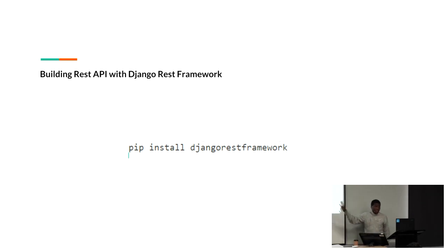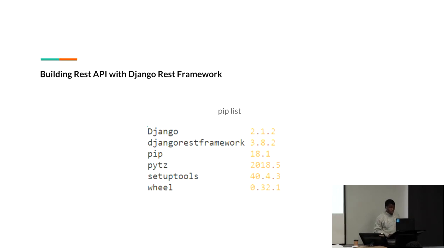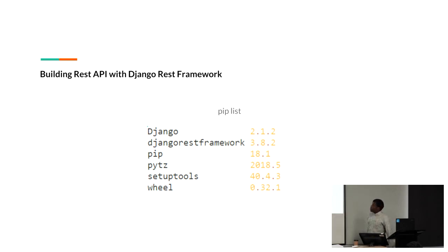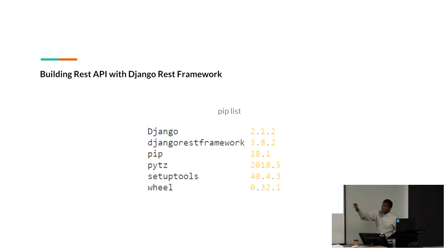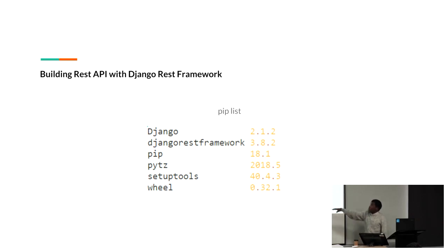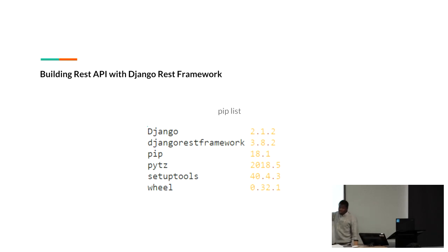After you finish the installation of the Django REST framework, you can use PIP. PIP, if you don't know, is a package manager for Python — similar to NPM in the JavaScript world. Here in Python we have PIP to install different packages. You can see all the packages that I have in this project.